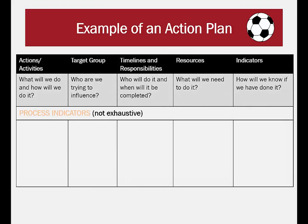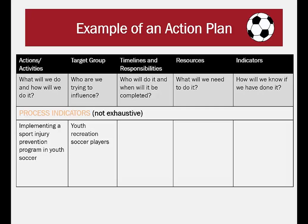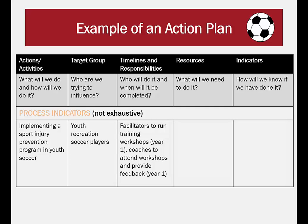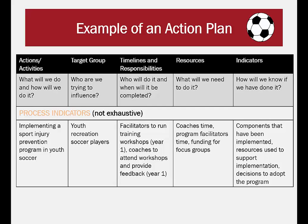Now let's look at the process indicators for the Youth Soccer Sport Injury Prevention Program. Actions/activities and target group are the same as the previous slide. Timelines and responsibilities: In year one, facilitators will run training workshops and coaches will attend workshops and provide feedback. Resources: The resources needed are the coaches' time, the program facilitator's time, and funding for focus groups. Indicators: The indicators of completion will be the components that have been implemented, the resources used to support implementation, and the decision to adopt the program.